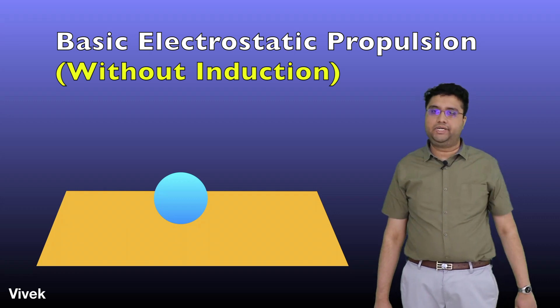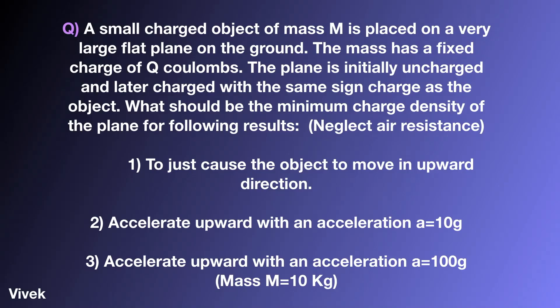Let's see the problem in depth. A small charged object of mass M is placed on a very large flat plane on the ground. The mass has a fixed charge of Q coulombs and the plane is initially uncharged and later it is charged with the same sign as that on the object. What should be the minimum charge density of the plane to get the following results? We are neglecting air resistance.